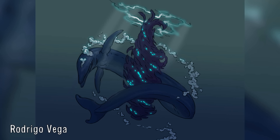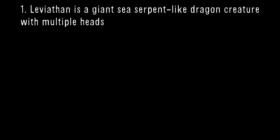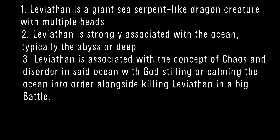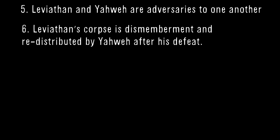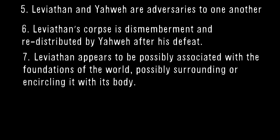That's about it for Leviathan and Rahab. He's mentioned here and there with limited details about his origins and significance. A lot of the information about the creature is fragmentary and doesn't all fit together cohesively 100%. However, from all this we can get a pretty firm understanding of what Leviathan is. Number 1: Leviathan is a great sea serpent-like dragon creature with multiple heads. Number 2: Leviathan is strongly associated with the ocean, typically the abyss or deep. Number 3: Leviathan is associated with the concept of chaos and disorder in said ocean, with God stilling the ocean into order alongside killing Leviathan in a big battle. Number 4: Leviathan in his battle with God appears to have been originally associated with the creation of the universe. Number 5: Leviathan and Yahweh are adversaries to one another. Number 6: Leviathan's corpse is dismembered and redistributed by Yahweh after his defeat. And Number 7: Leviathan appears to be possibly associated with the foundation of the world, possibly surrounding it or circling it with its body.